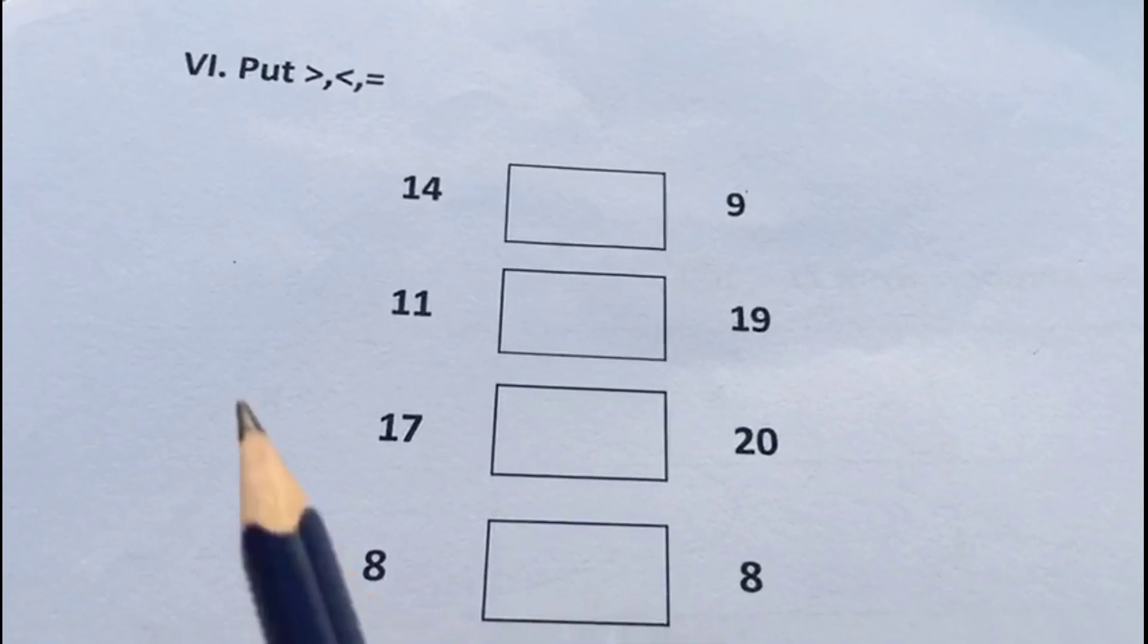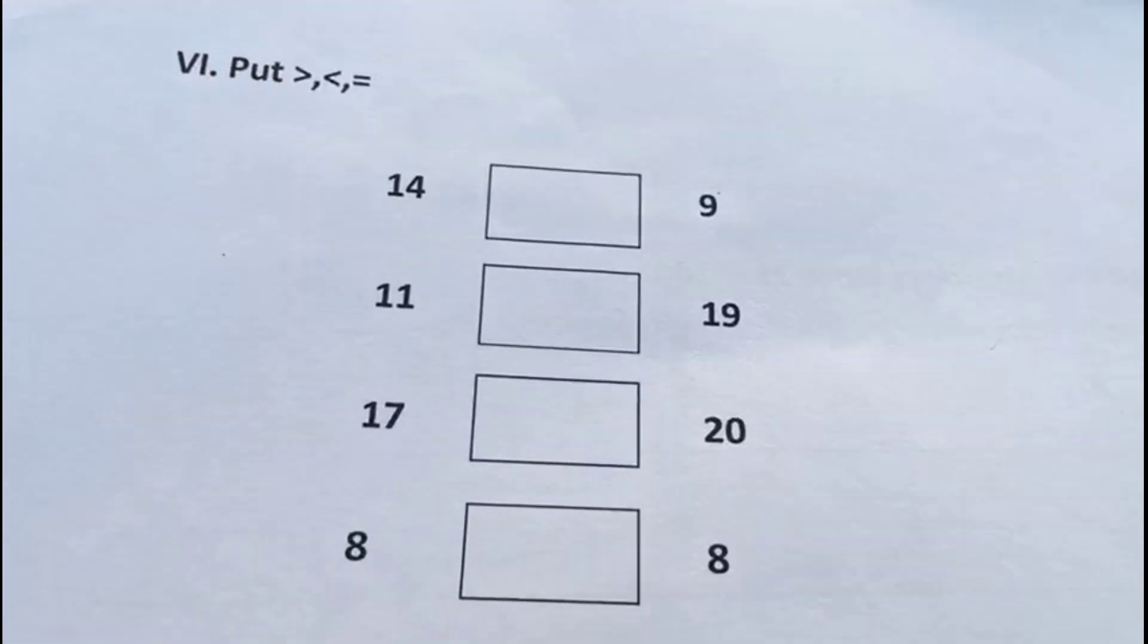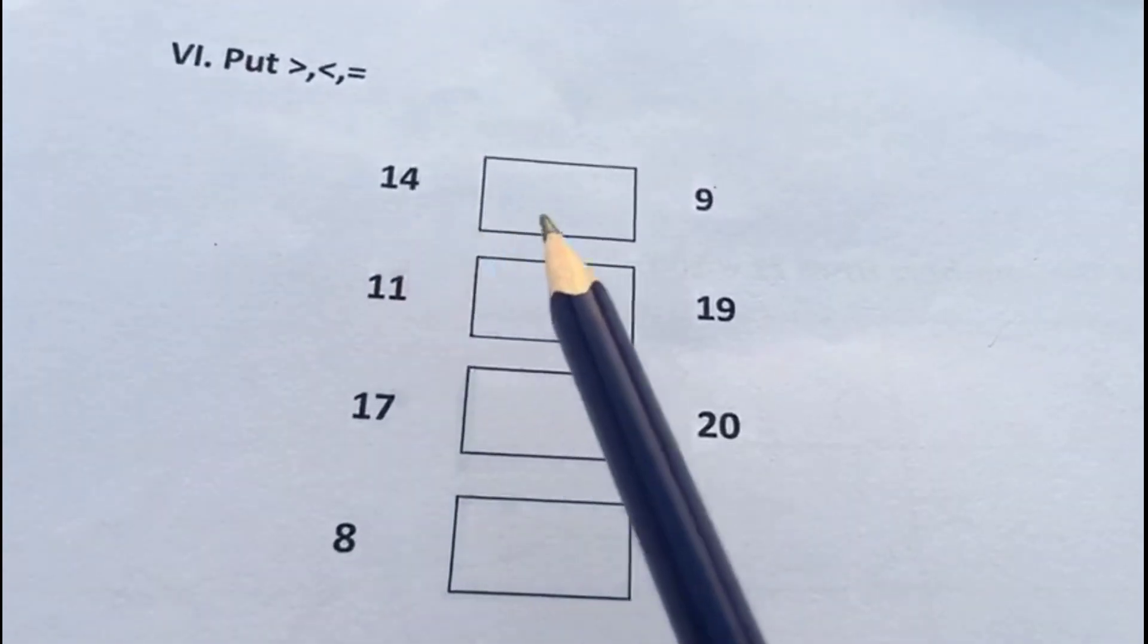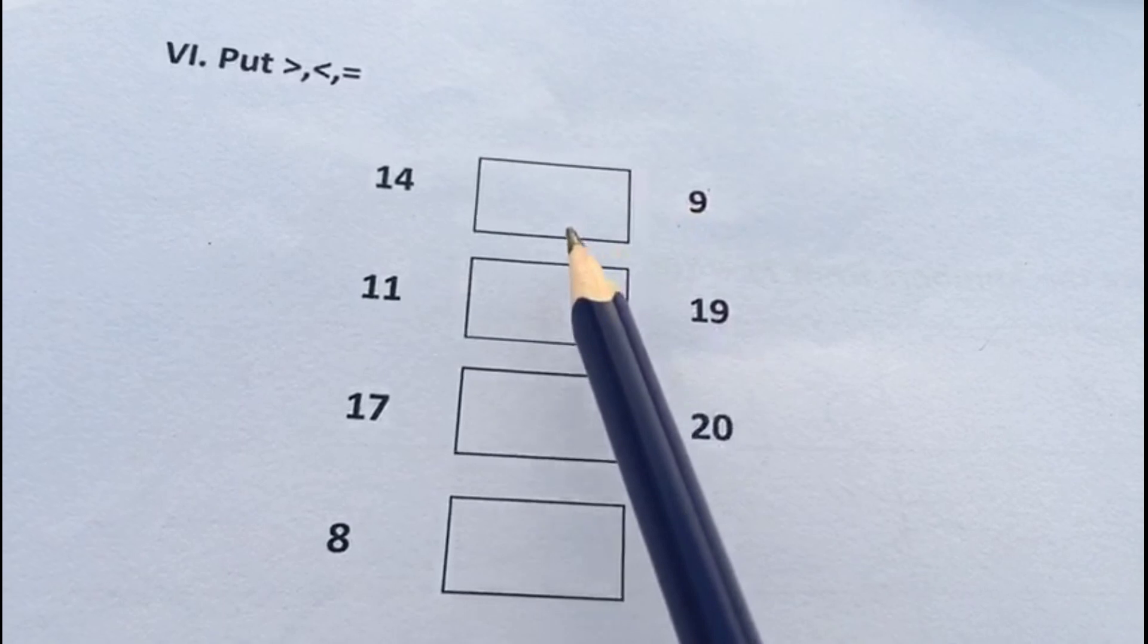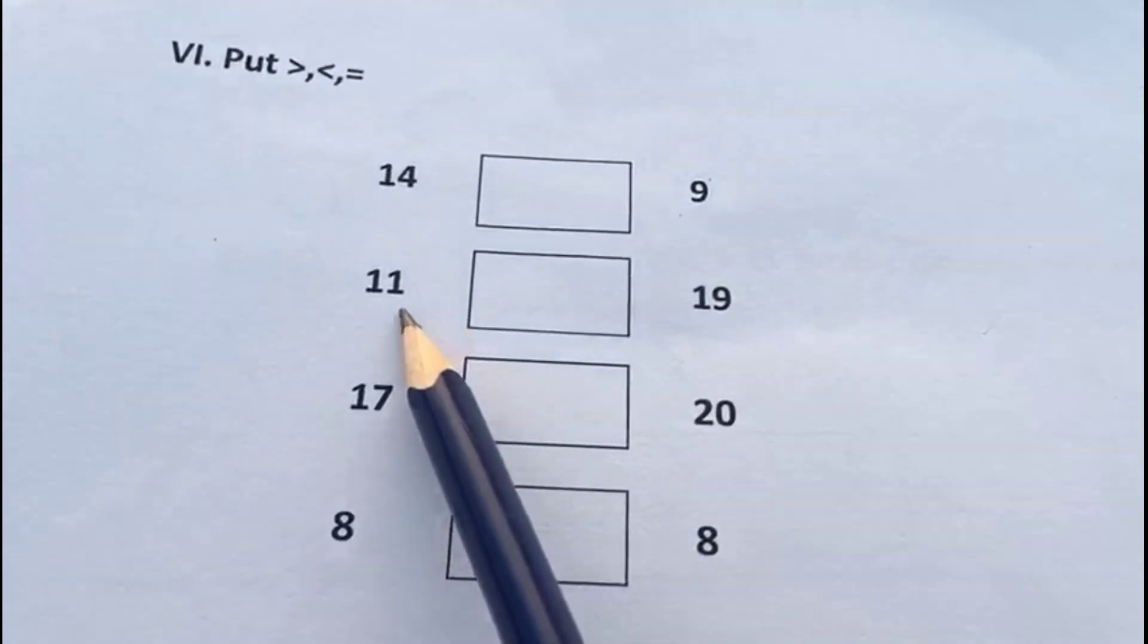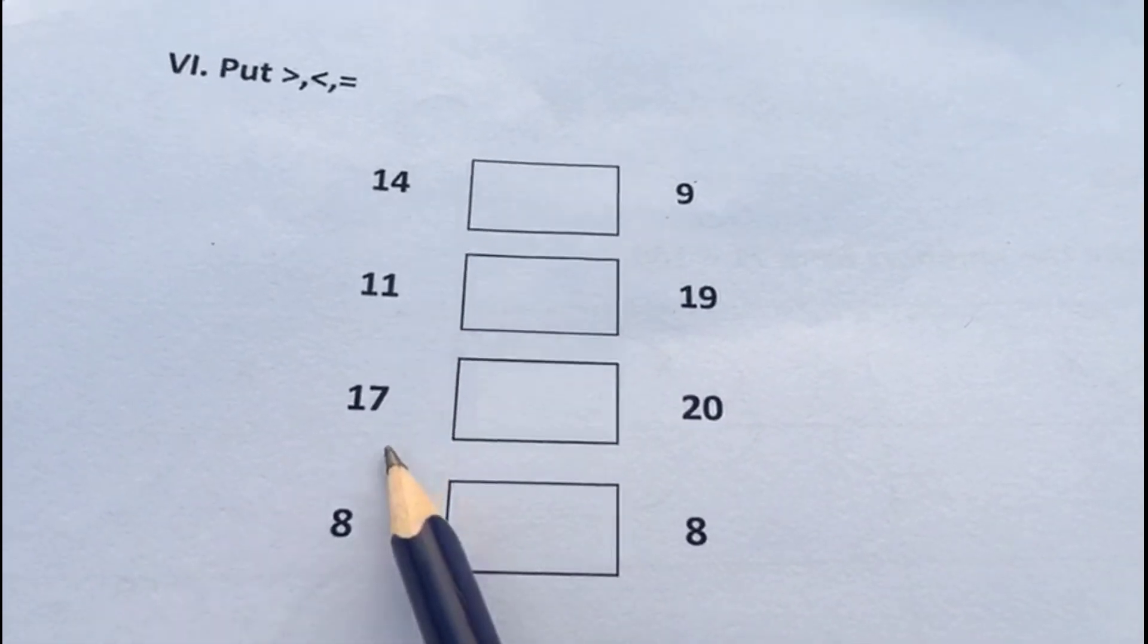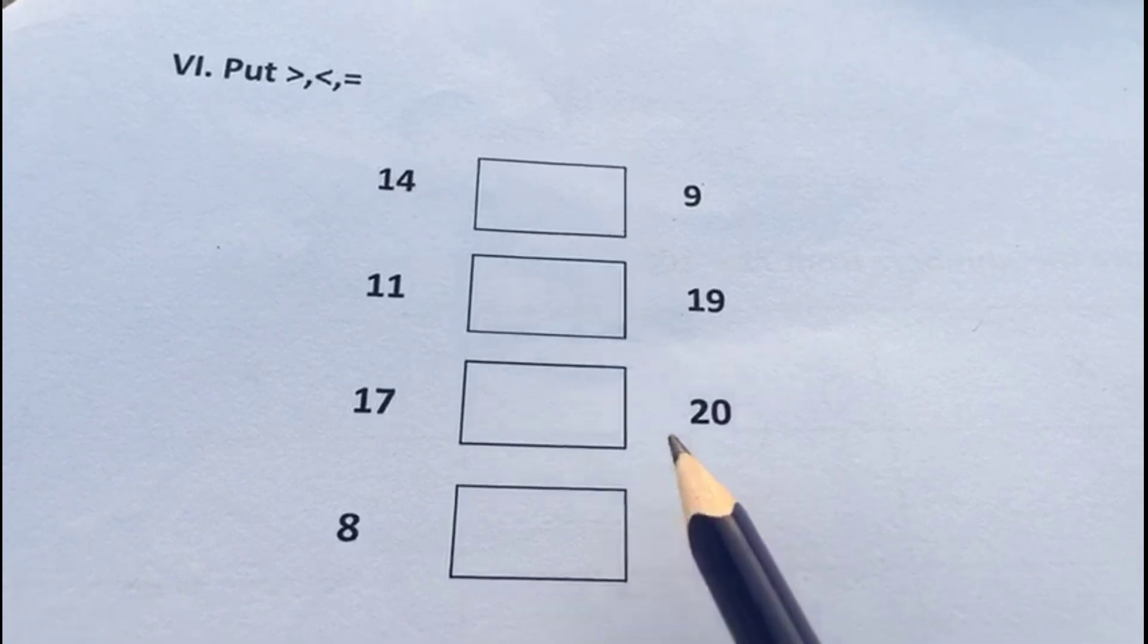This is our sixth question: put greater than, less than, and equal to. Here we have symbols of greater, lesser, and equal to, and the numbers. There is a column between the numbers. Ask your child to identify the greater, lesser, or equal numbers and mark the symbol according to the number value.